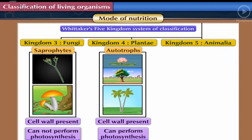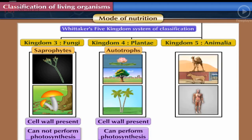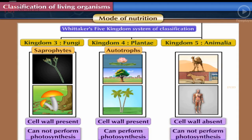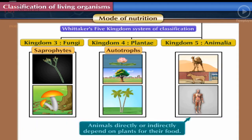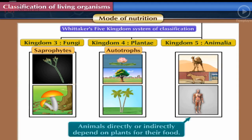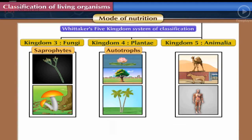Kingdom Animalia included all animals. In animals, cell wall is absent and they cannot make their own food. They directly or indirectly depend on plants for their food. Therefore, animals are heterotrophs and are ingestive.